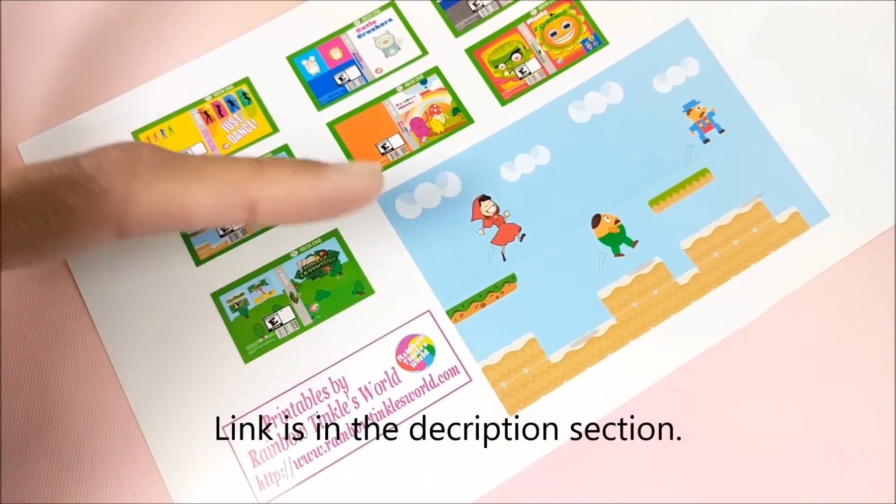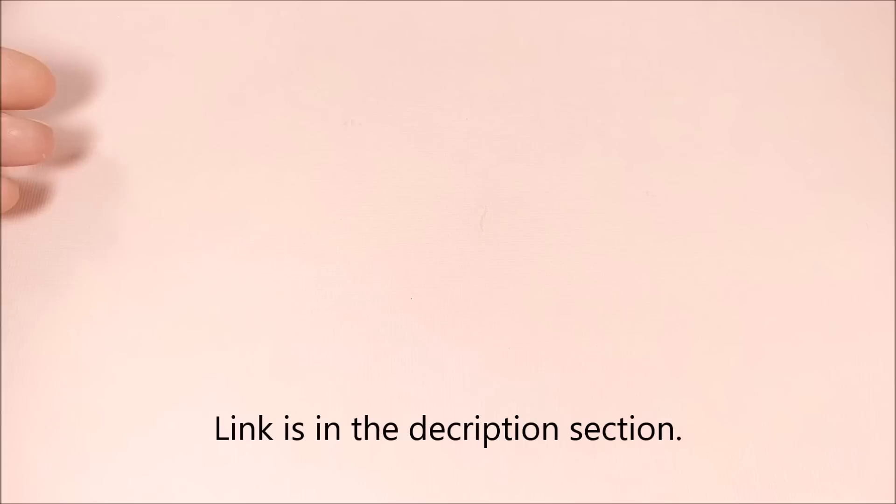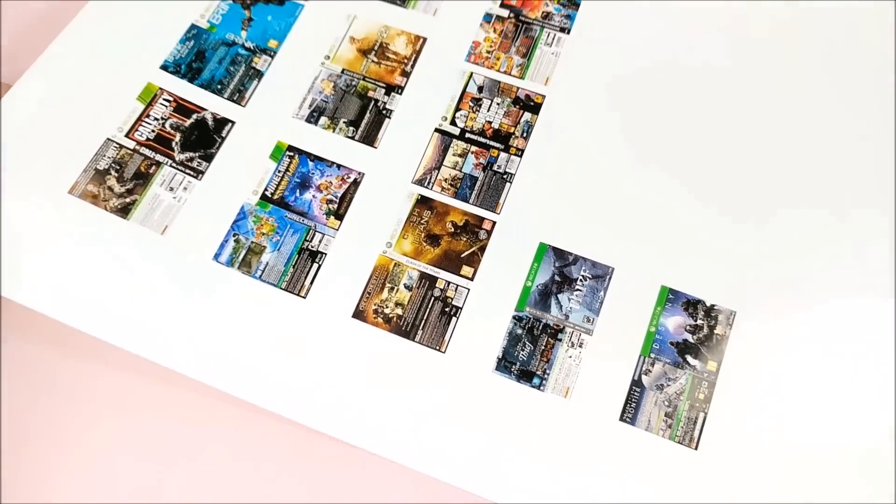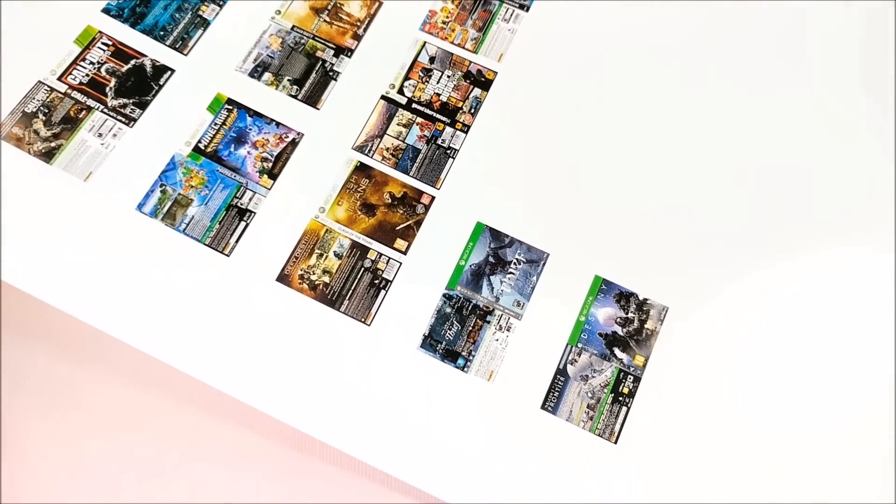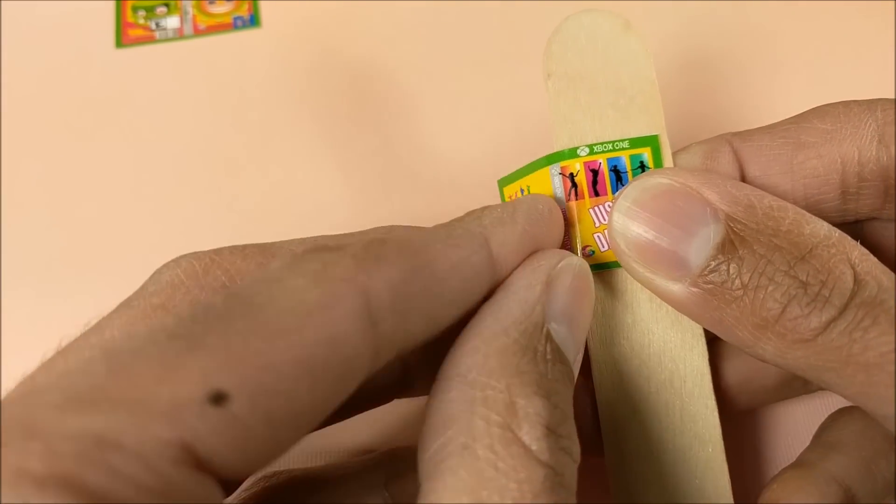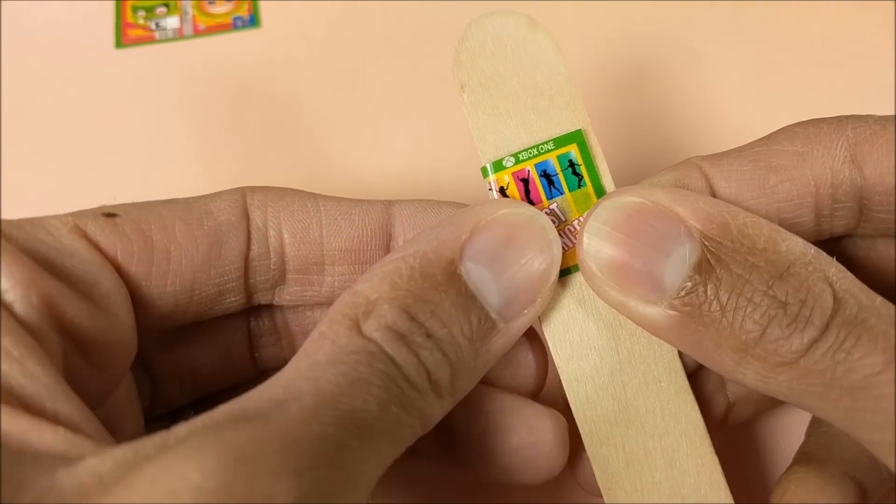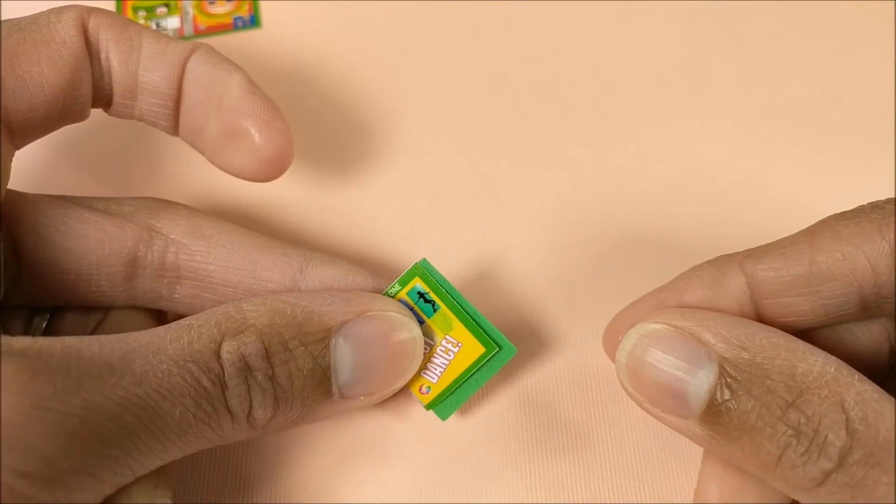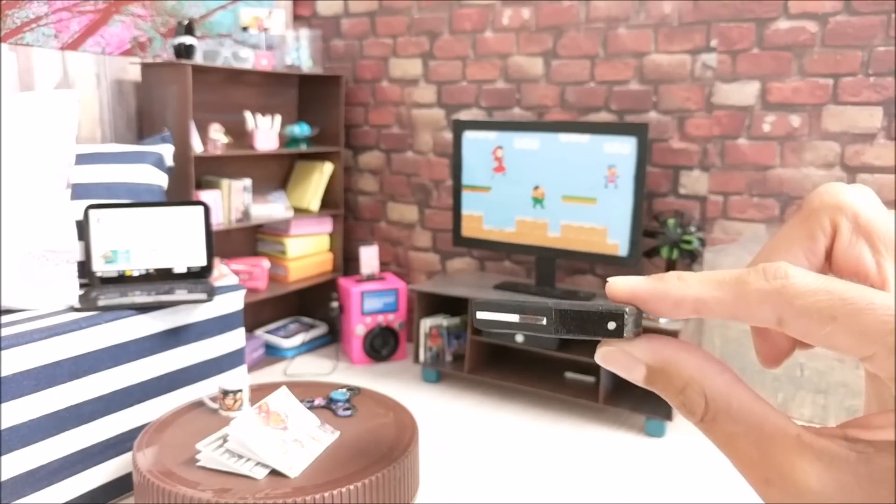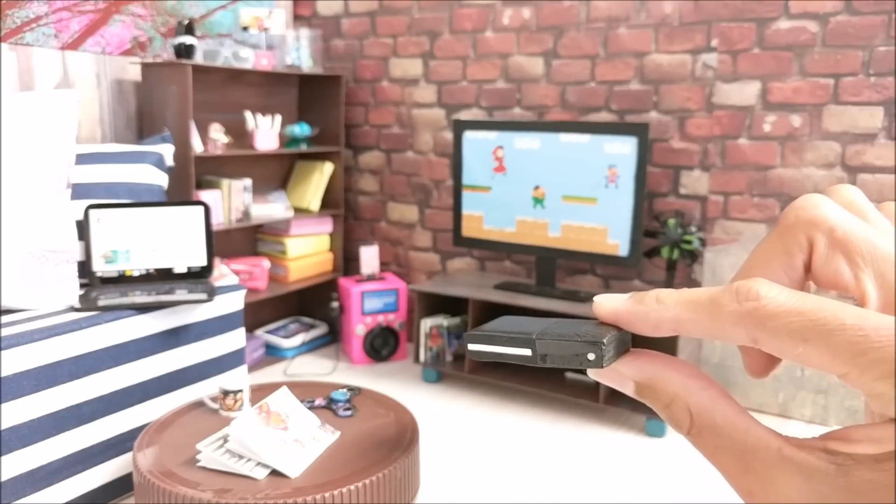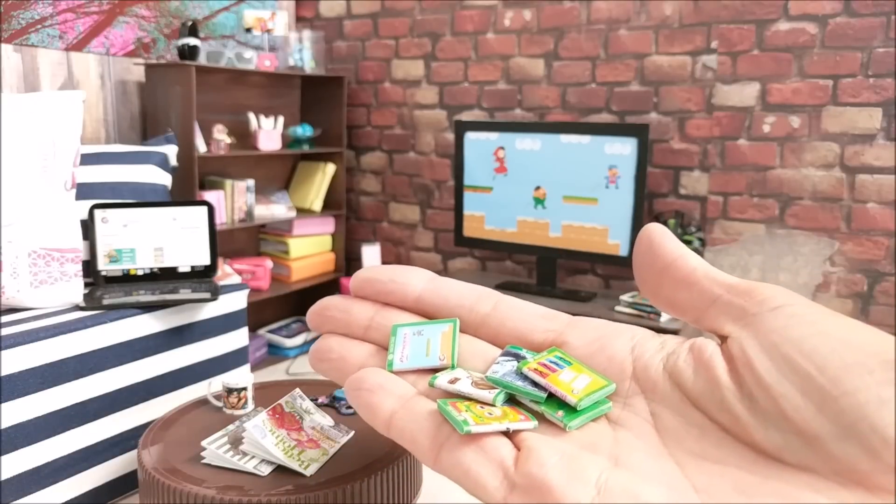And finally for the games. Just a printable here. These are games that I made up, or you can google Xbox games front and back. And here I've used photo paper, fold on a popsicle stick. And I'm just gluing green craft foam inside. I add my console, games, and controllers.